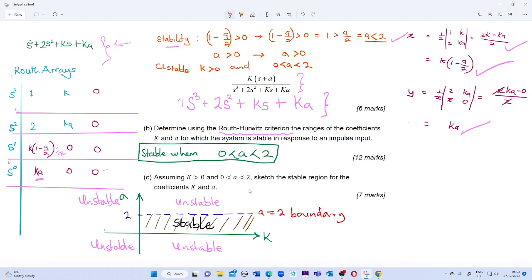Also, we apply the same method to the last column, which is ka. By pulling out a from k, therefore a is greater than 0. So therefore, for the closed loop transfer function to be stable, 0 must be less than a and a must be less than 2. So for the system to be stable using the Routh-Hurwitz criterion, 0 must be less than a and a must be less than 2.